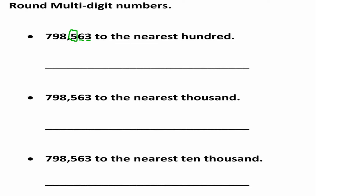The way to round is to look at the smaller value, which is in the tens place — that's 6. I'm going to underline it and point an arrow to the hundreds. Because we know: any number that is 5 or more, we round up; any number less than 5, we keep it the same.